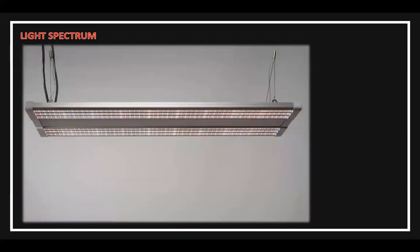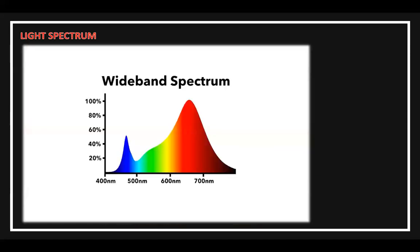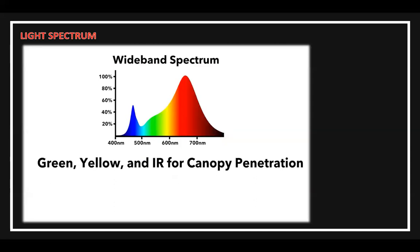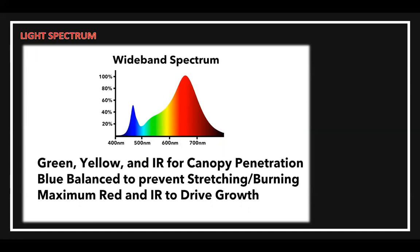Now let's look at a different type of light called a wide band light. It looks like a white light, but it actually isn't because it's creating colors that our eye can't see in the red and infrared range. This wide band spectrum is designed for optimal plant growth. It has plenty of green, yellow, and infrared light for excellent canopy penetration. The amount of blue light is balanced to prevent either stretching or burning. Lastly, it has an abundance of red and infrared light to drive growth from seed all the way through flower.